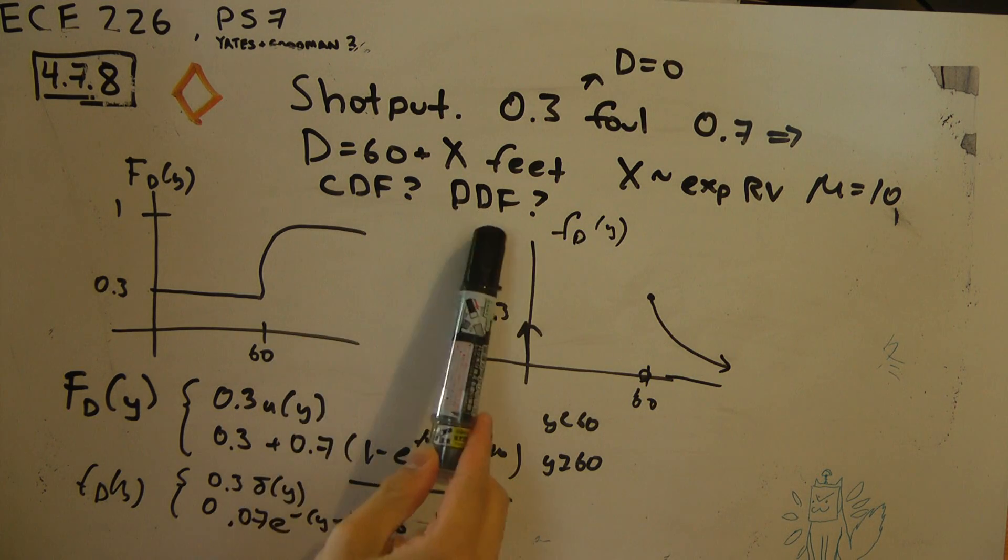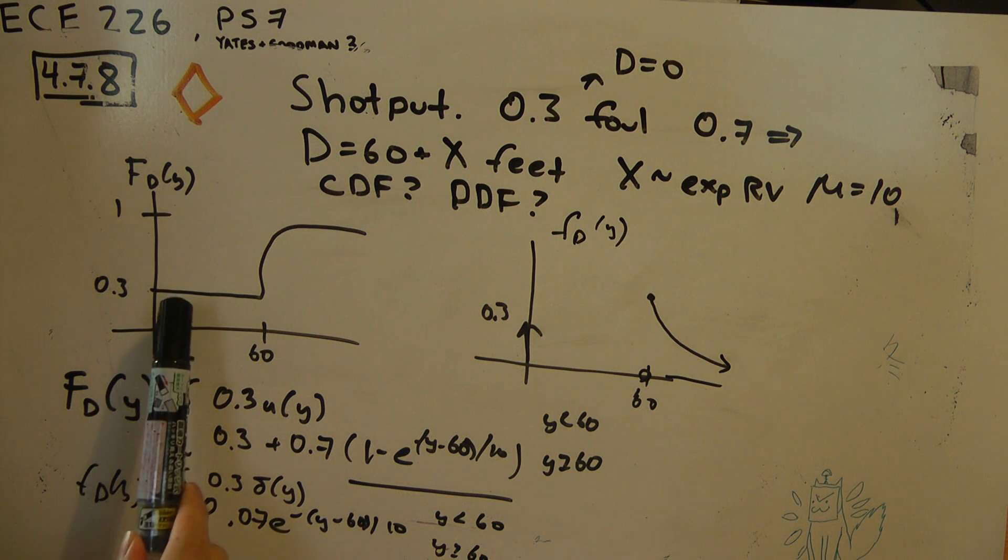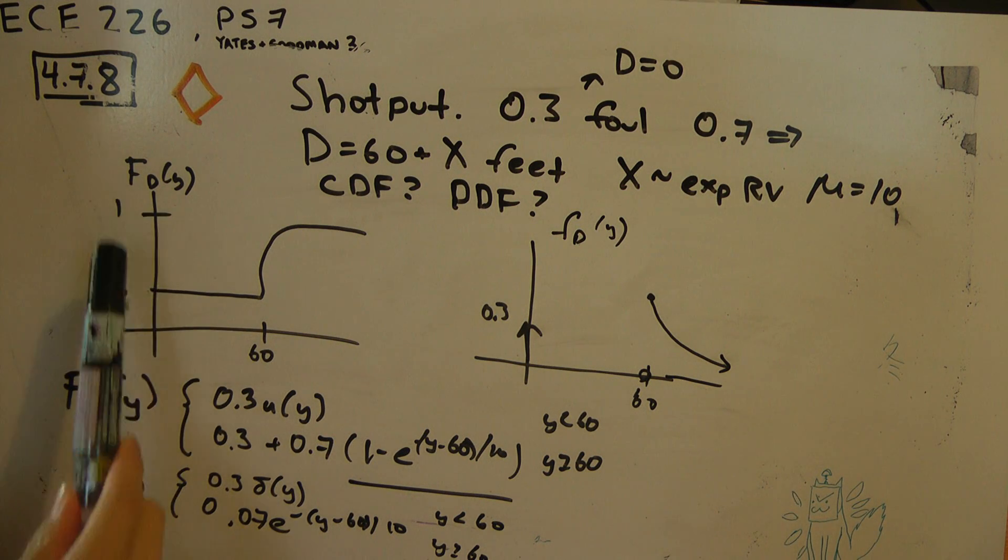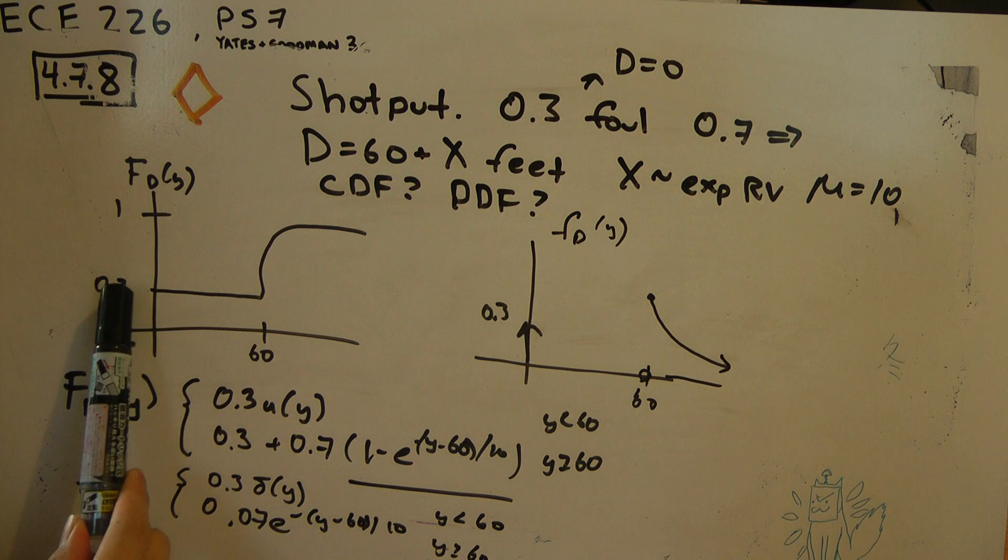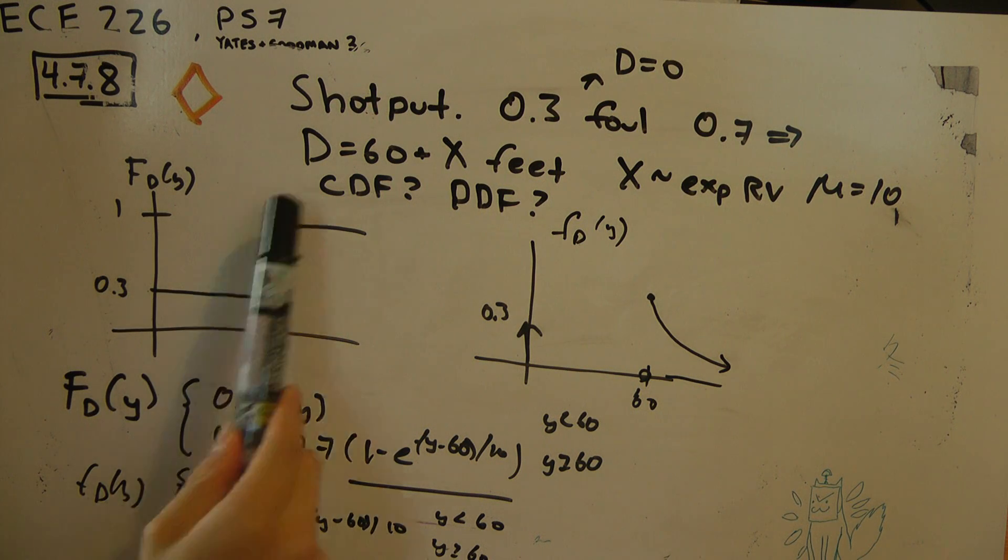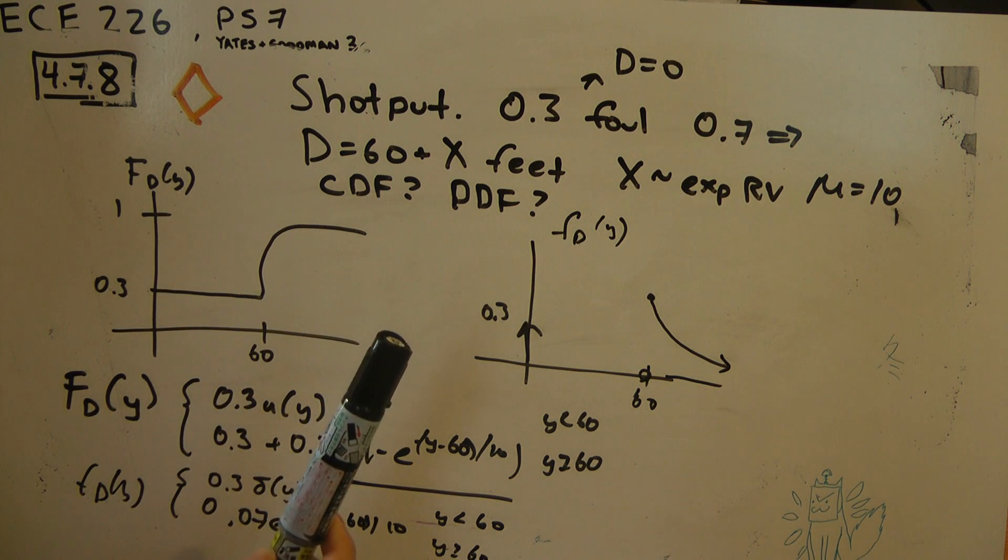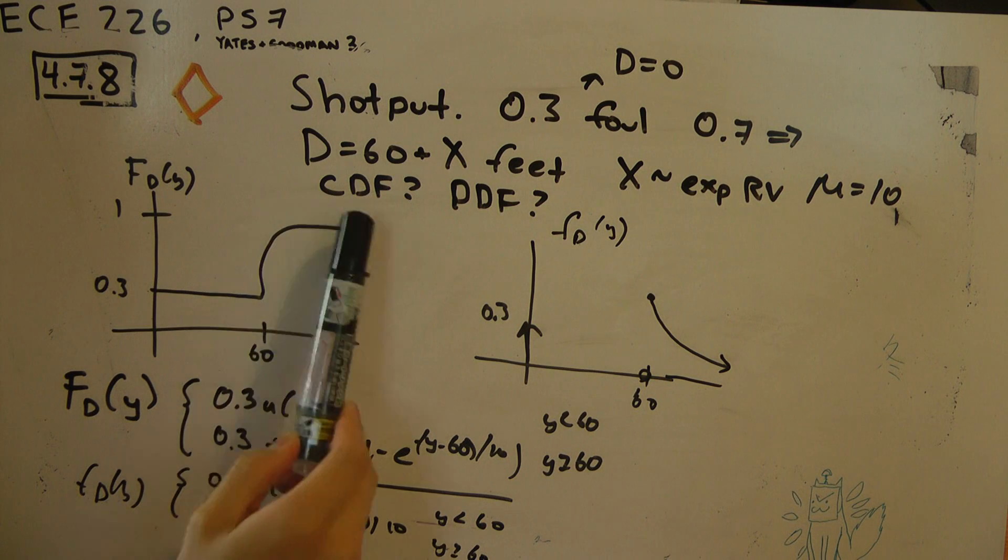So ask for the CDF and the PDF. The CDF will look like this where you fail until 60 and then suddenly you have a curve upwards. This is like the CDF of the exponential.